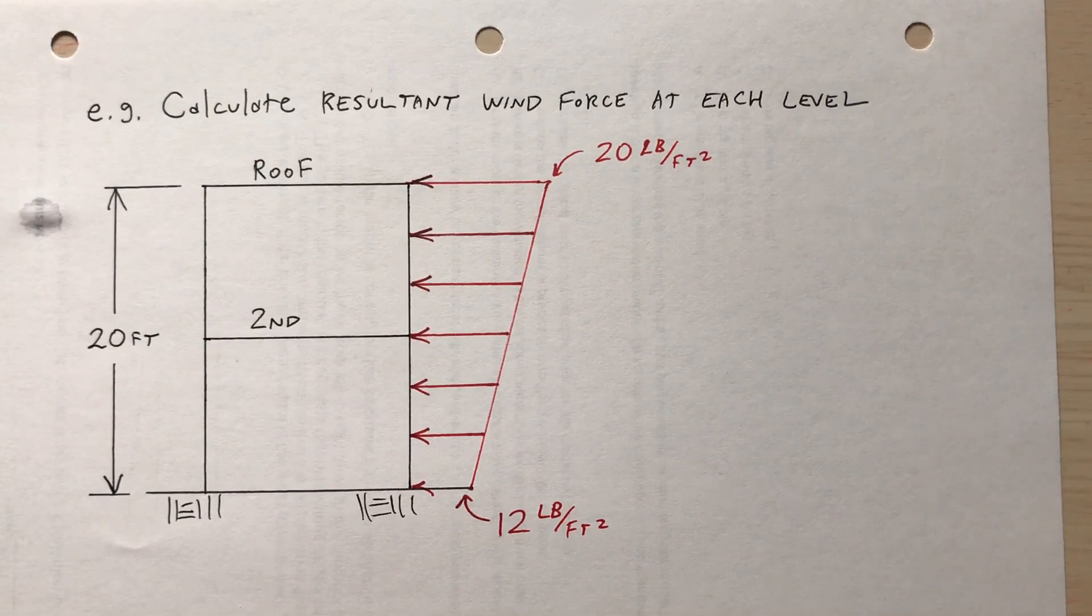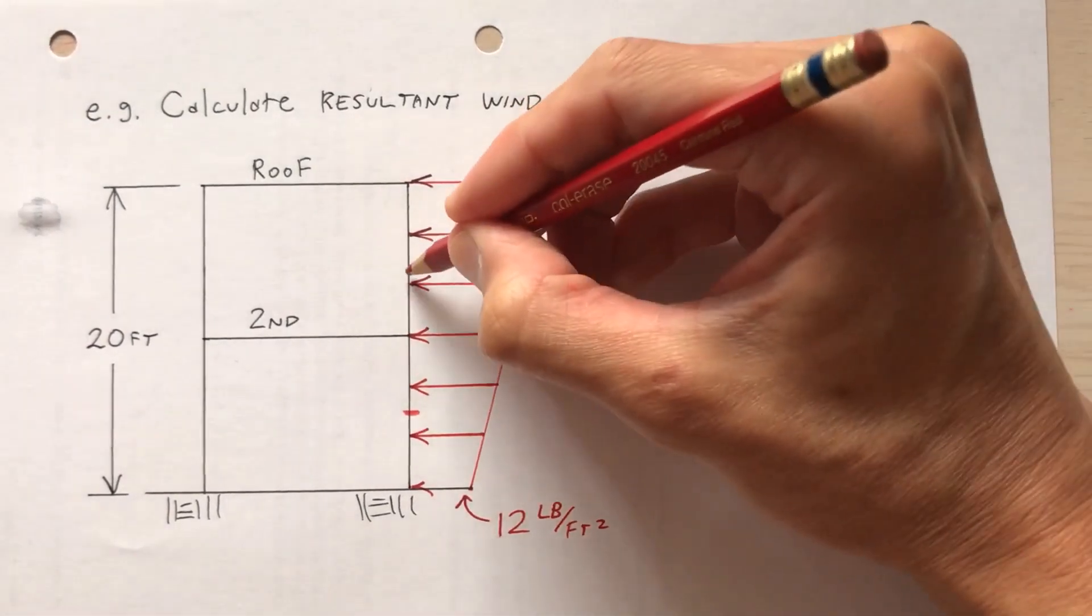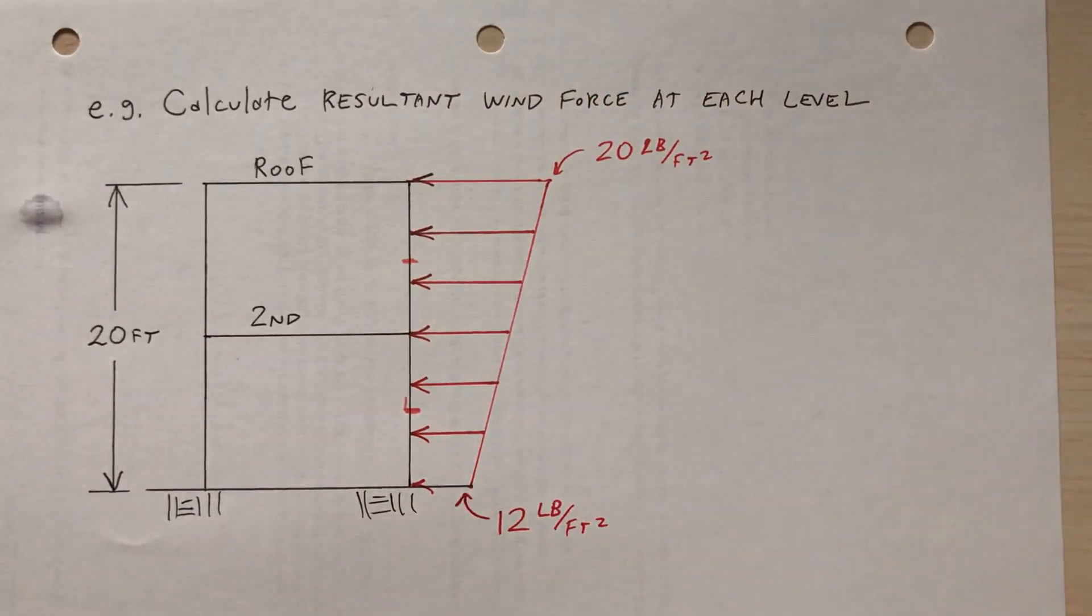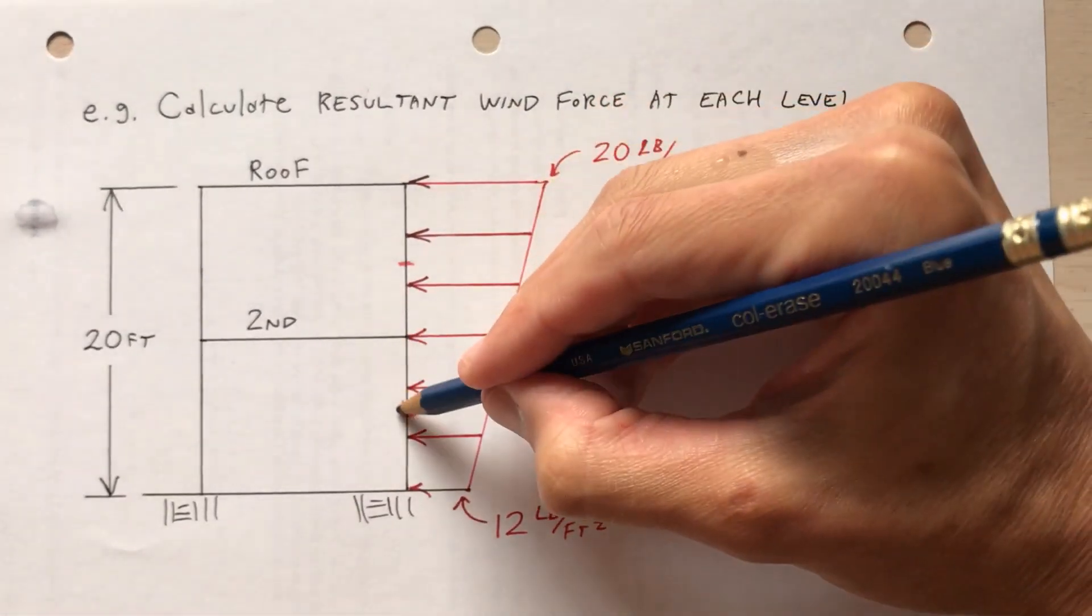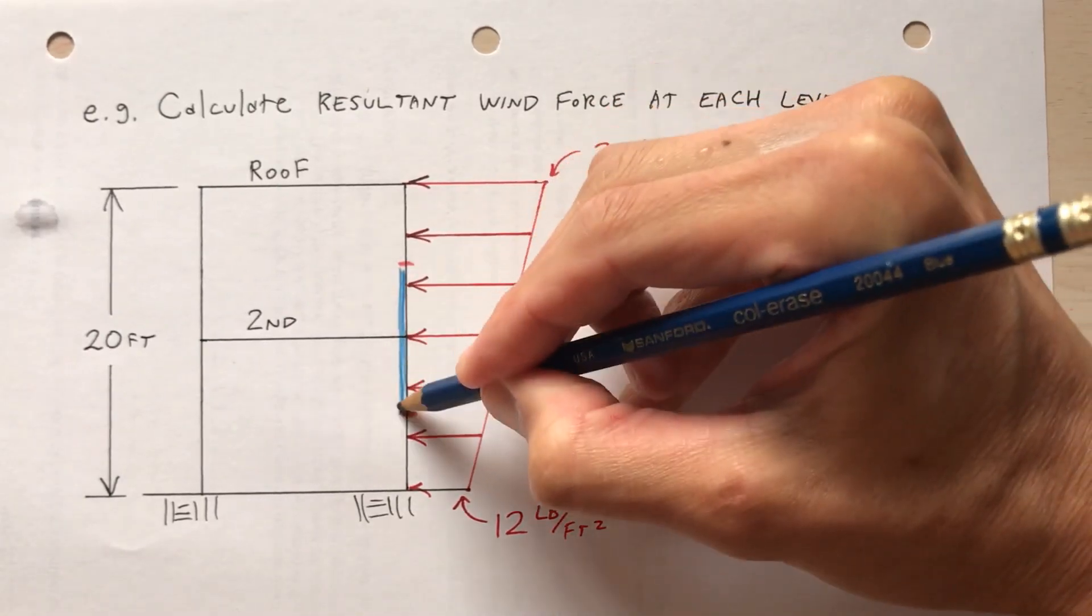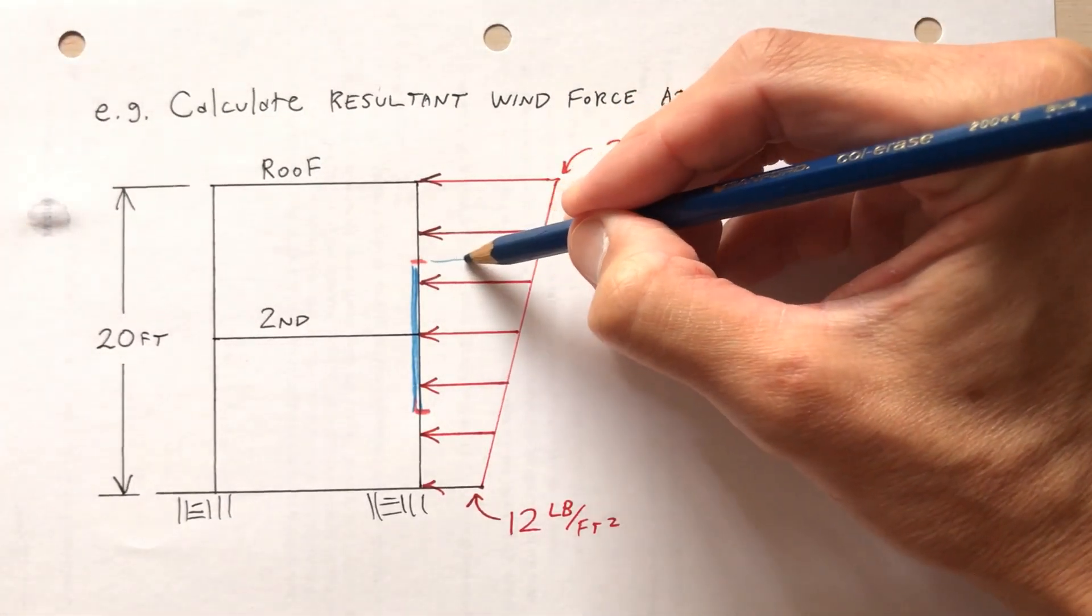So the wind force at each level, the second floor, there's a certain portion of the wall that's tributary to that. So the tributary area from here to here, this area, this right here, that portion of the wall, it's tributary to this portion of the wind load.